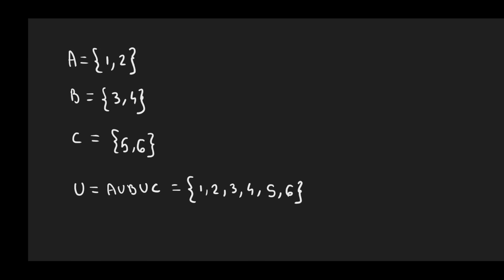So how can we find the complement of a given set? Let's say set A. The complement of a set — so let's say set A — is the set containing all the elements which are found in the universal set but not in set A. Therefore in this case, the elements we find in A are 1 and 2. So in order to find the complement of A, we take the universal set, we remove 1 and 2, which are found in A, and we write the rest: so 3, 4, 5 and 6.